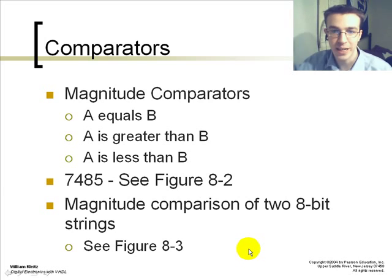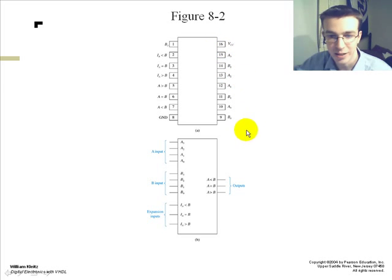The comparator is also a magnitude comparator, where A equals B, A is greater than B, or A is less than B. This is shown in figure 8-12. This type of device has three types of outputs.